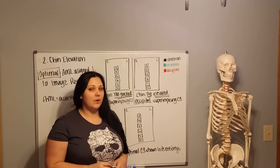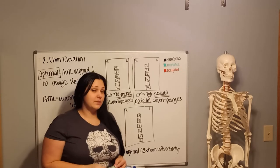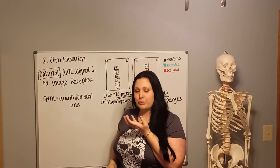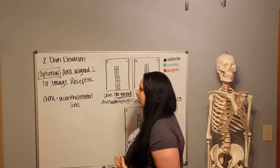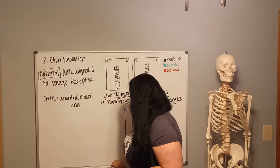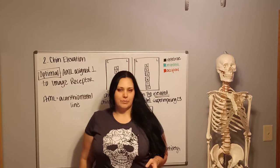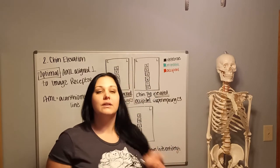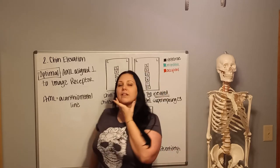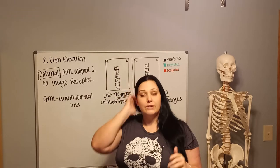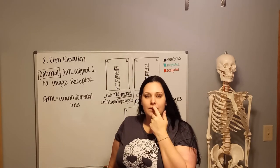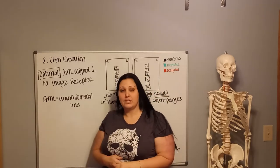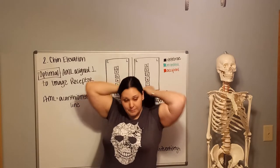Now we're going to continue on to the second part of evaluating the AP Axial C-Spine: chin elevation. The question is whether your patient is appropriately positioned with their chin. In an optimal image, I tell my students to have the patient stand as though they're in grammar school — chin just slightly elevated. That level of elevation should align the acanthion to the external acoustic meatus, or AML, perpendicular to the IR.